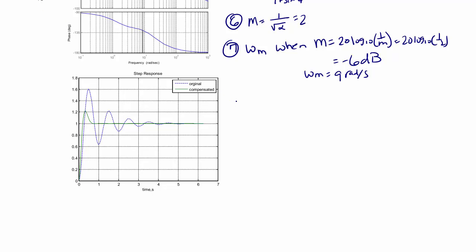Step 8. Now we will use omega m to find the lead compensator corner frequencies. T lead is equal to 1 over omega sub m times the square root of alpha. So T lead is 0.22.